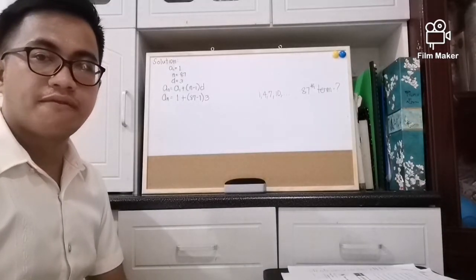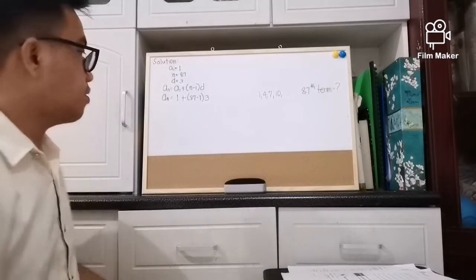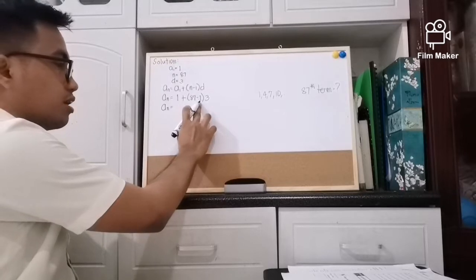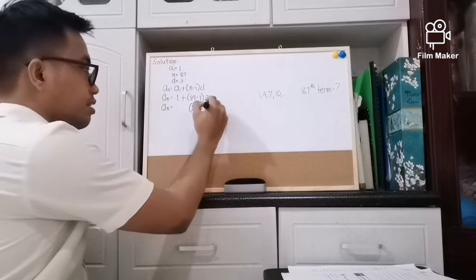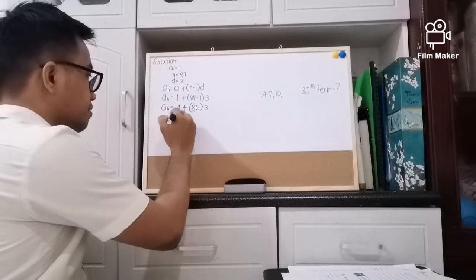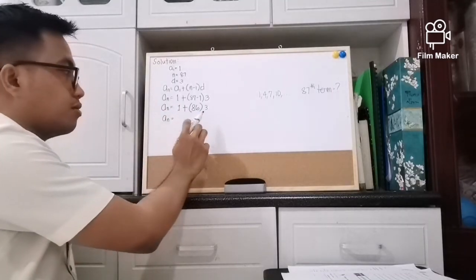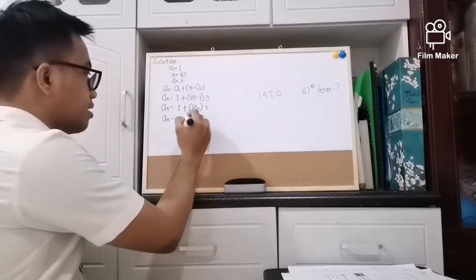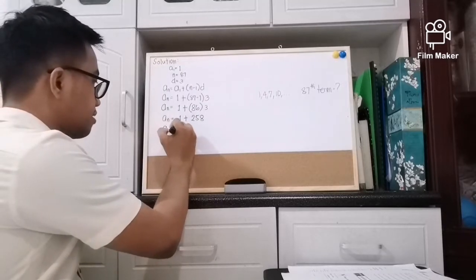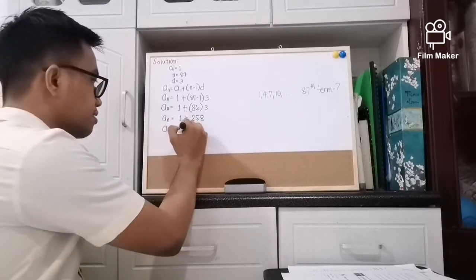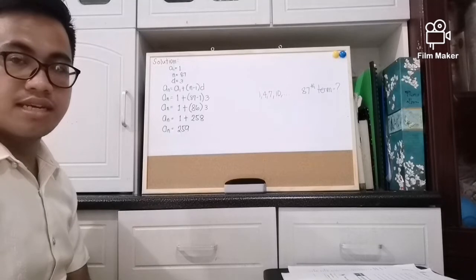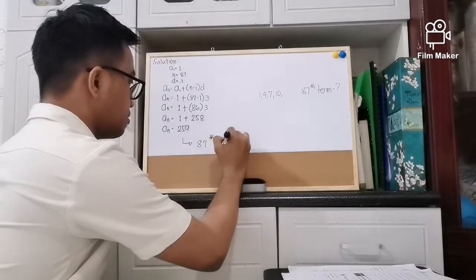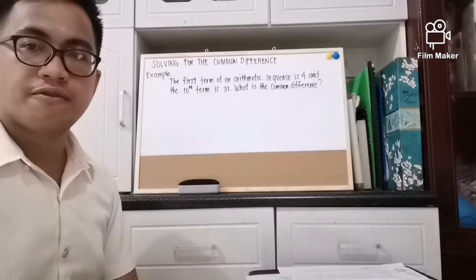After substitution, we operate using PEMDAS. First, we operate inside the parentheses: 87 minus 1 is 86. Next, multiply 86 and 3, which gives 258. Then 1 plus 258 equals 259. So the 87th term is 259.